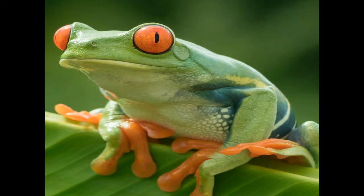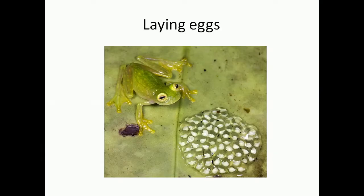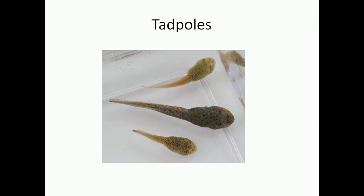Next we have the frog. Like fishes, frogs also lay several eggs in water and their eggs are also called spawns. The eggs of the frog float in the water and they are protected by a layer of jelly. These eggs then hatch into tadpoles after about 3 weeks. The tadpole looks like tiny fishes and they also breathe through gills, just like the fishes.